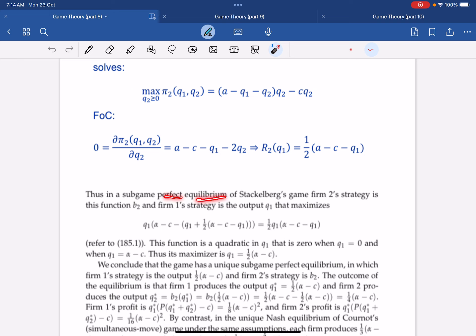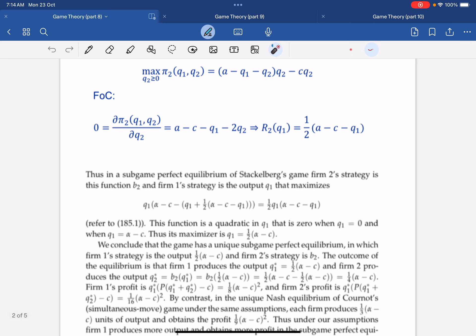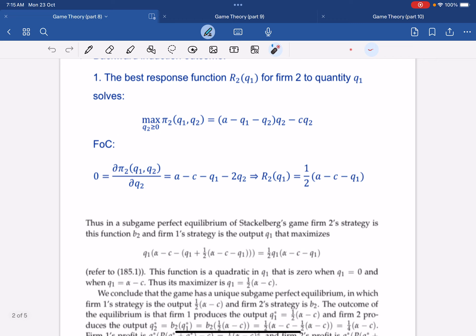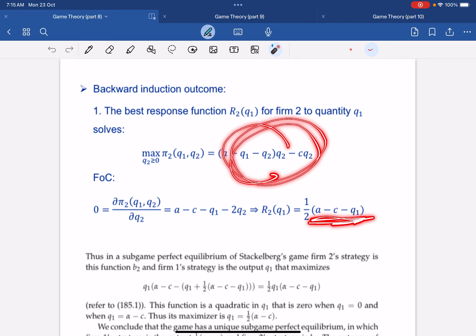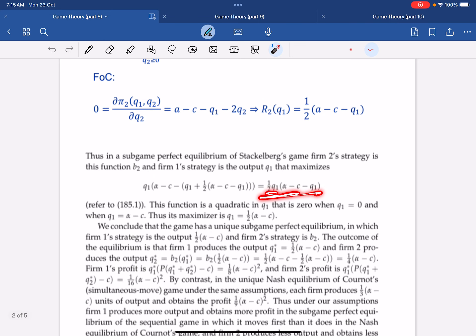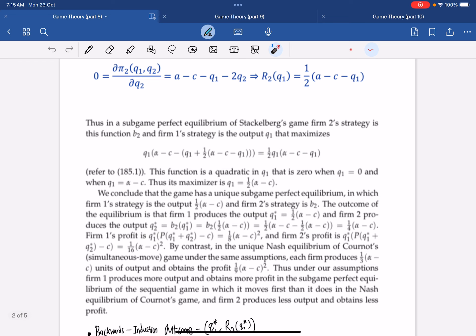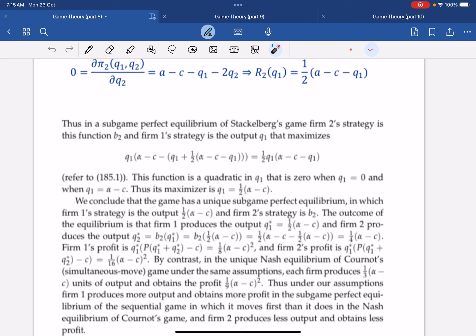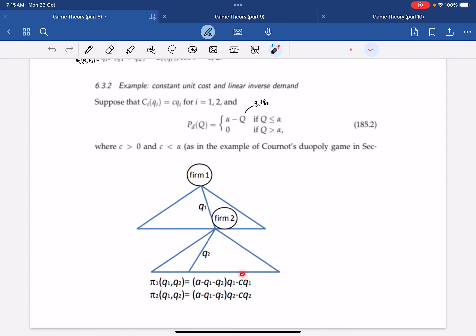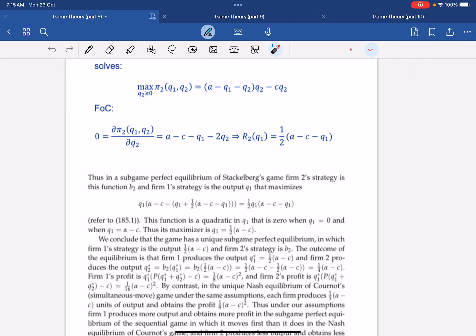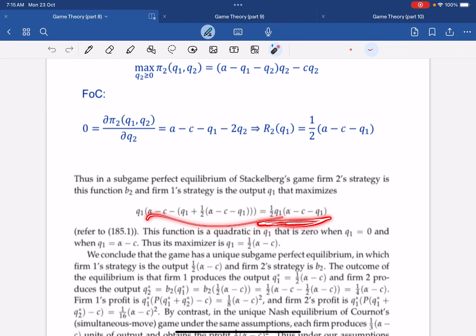Thus, the subgame perfect Nash equilibrium of this game is when Q2 produces this. You just need to sub this Q2 into here, and this will be the resulting profit. And Q1 strategy is now to produce Q1. Now you have Q1's profit. We already know what Q2 is in terms of Q1, so we just need to sub that in, and we see that it reduces to this. Firm 1 needs to produce an output to maximize this.